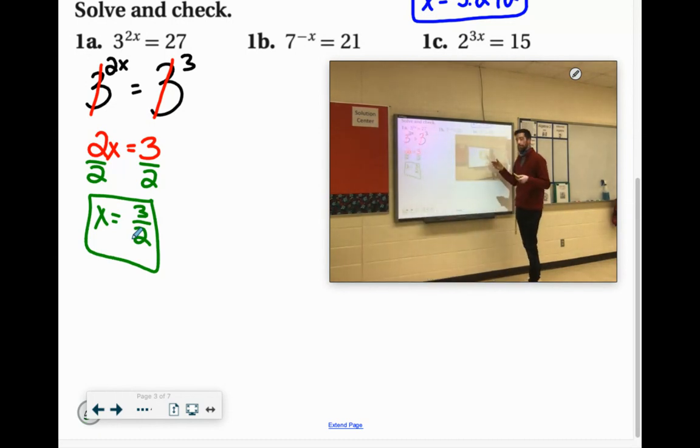If we're working on the second one, 7 squared would be 49. So 7 and 21 don't have a common base. So we're going to have to use logs.